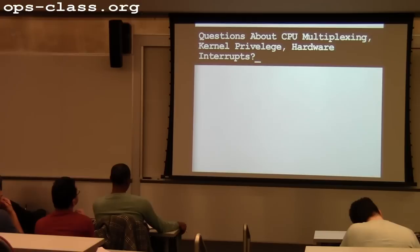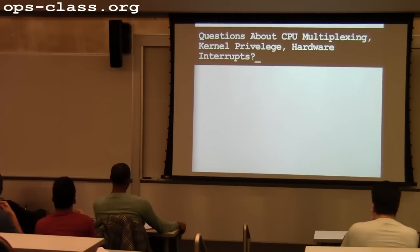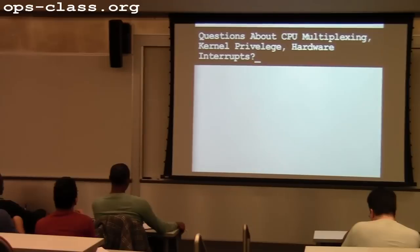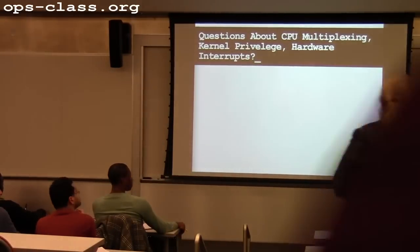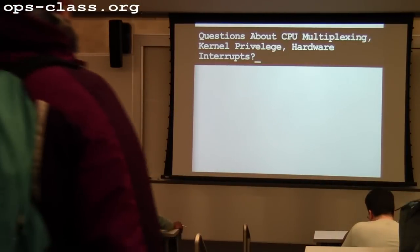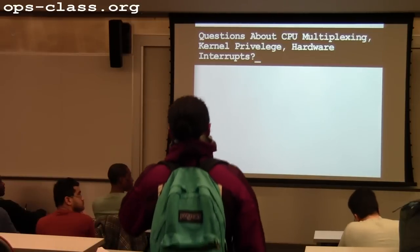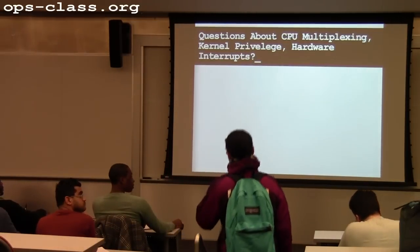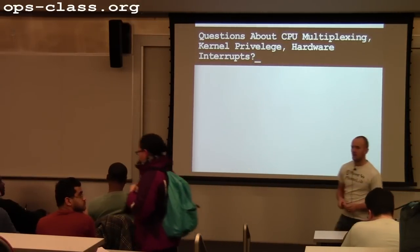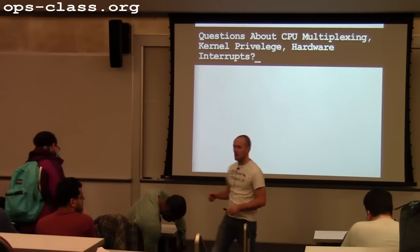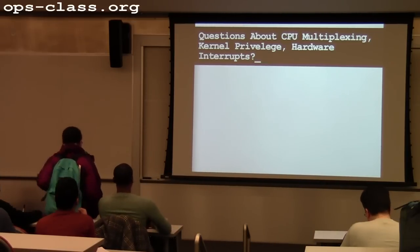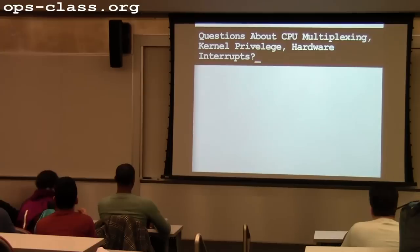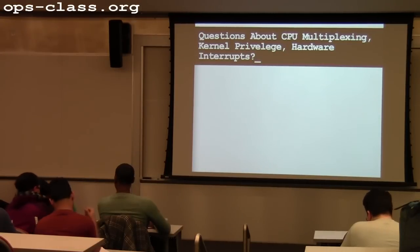On Wednesday we introduced the idea of CPU multiplexing and tried to motivate it. We talked about kernel privilege, which is one of the mechanisms the kernel uses to enforce multiplexing — not just of the CPU, but of other system resources as well. And then we started talking about interrupts; we got through a little bit about hardware interrupts. Any questions about the material we covered on Wednesday before we do a little bit of review?